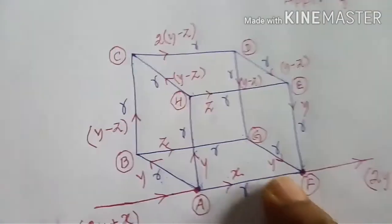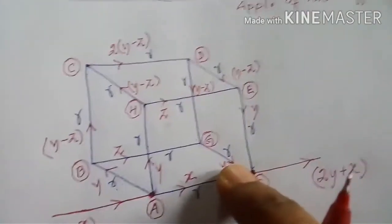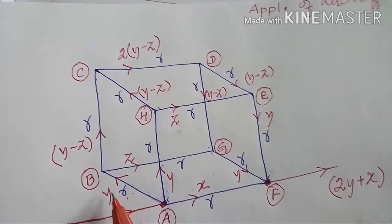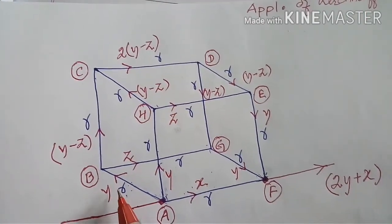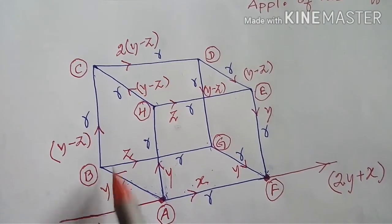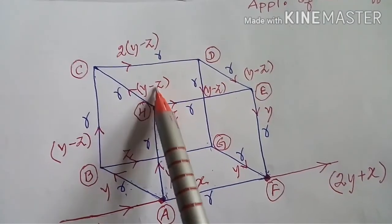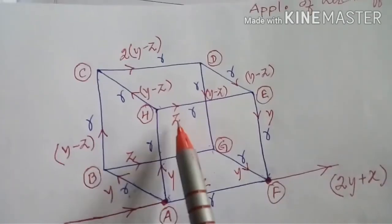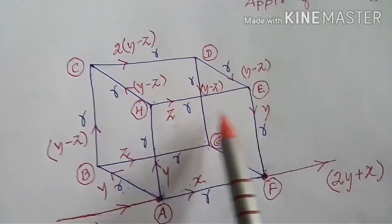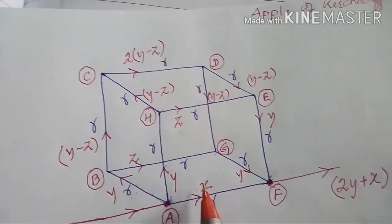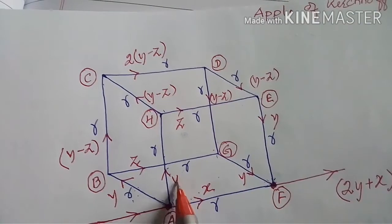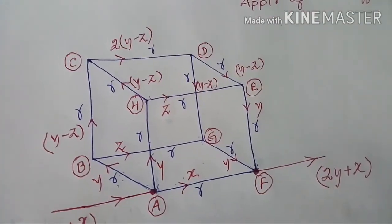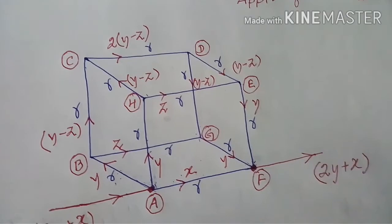All the currents are now marked — the red-colored labels indicate the current in each branch. Counting all 12 edges: 1, 2, 3, 4, 5, 6, 7, 8, 9, 10, 11, and 12. The current distribution across all 12 edges is complete, and we will solve for the equivalent resistance next.